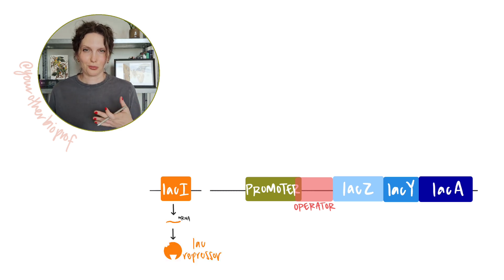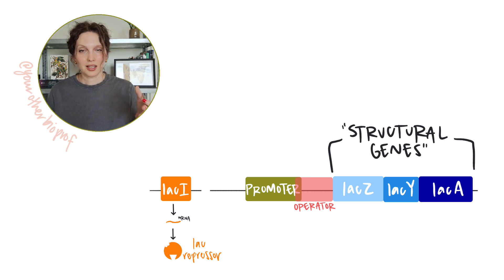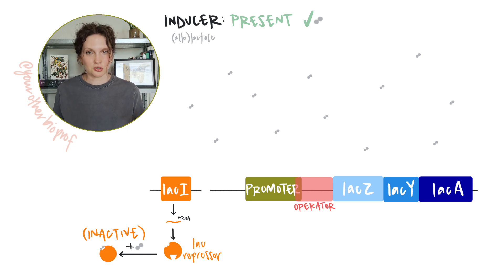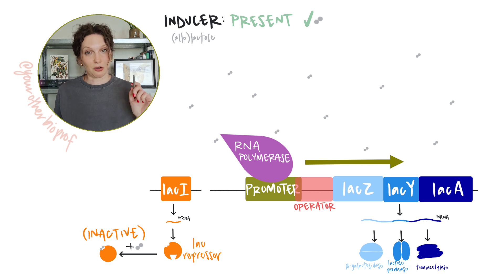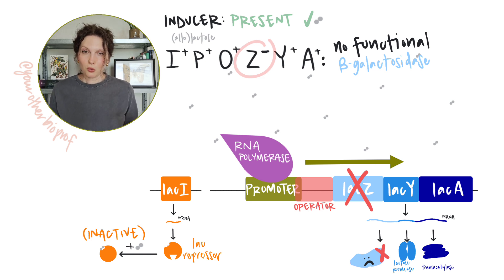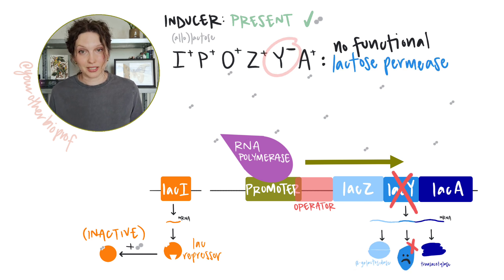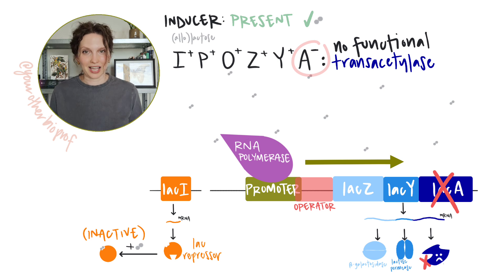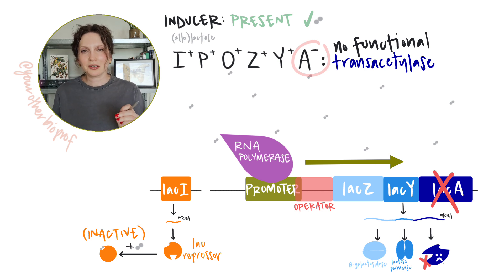Mutations in the lac structural genes are probably the easiest to think about, so let's start with those. In a scenario where lactose is available, you'd expect the lac operon to be expressed — the structural genes transcribed and their products produced. Z- indicates a mutation in the lac Z gene. A loss of function or null mutation means we're either not producing any product at all, or the beta-galactosidase produced is non-functional. Y- means a non-functional or absent permease. In practice problems, these are often treated as independent mutations, so an issue with one wouldn't necessarily impact another.